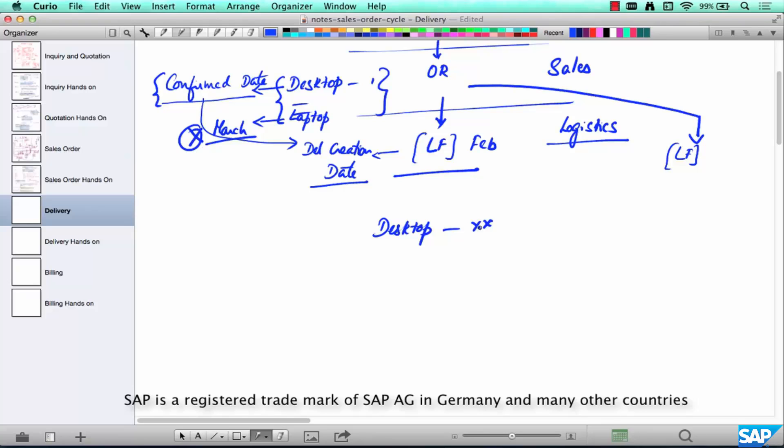What do you do in a delivery? Delivery essentially comprises of three pieces. Delivery, one is called Picking,